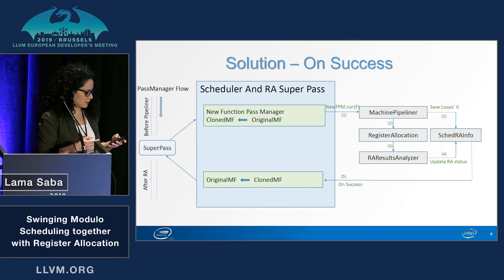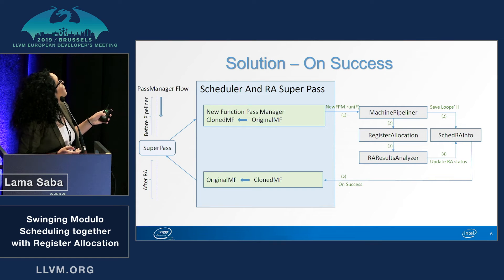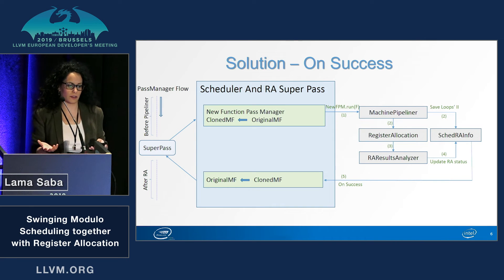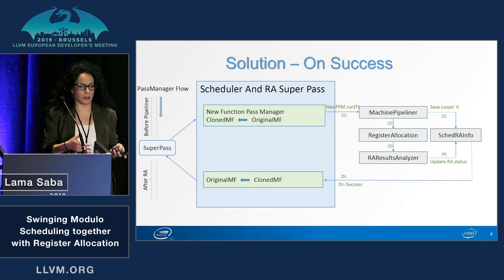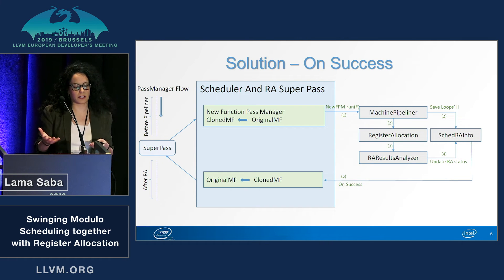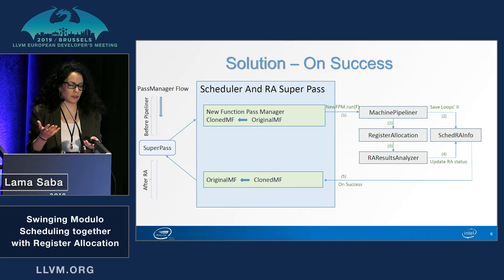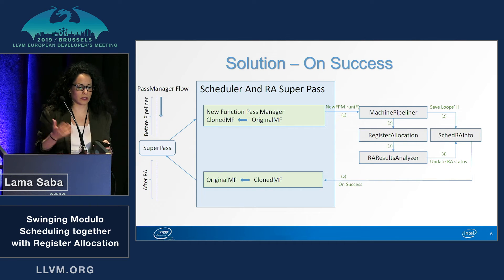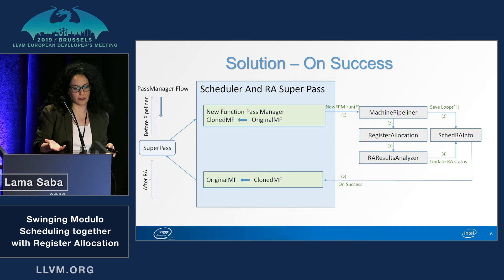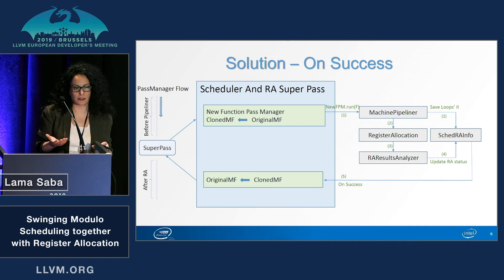In our pass manager flow, we replace the pipeliner and the RA passes with a new super pass. In this super pass, we have a new function pass manager and we clone the original machine function into a new machine function. We run the machine pipeliner and the register allocation, and we also run a new pass called RA result analyzer, which analyzes the RA for spill splits. It updates a new immutable pass called SCADRA info with its findings. We also make sure that the machine pipeliner updates the loop's initiation intervals it calculated into the SCADRA info.